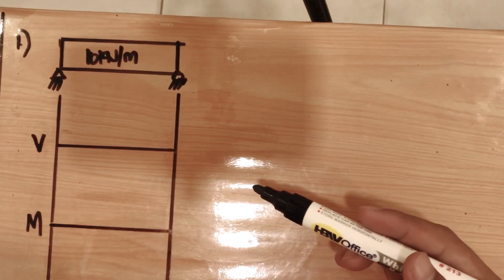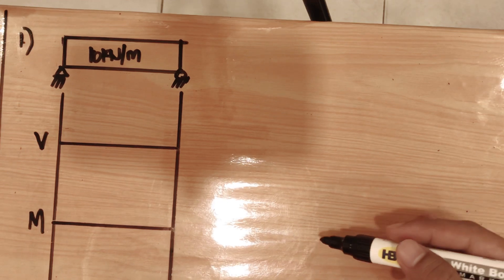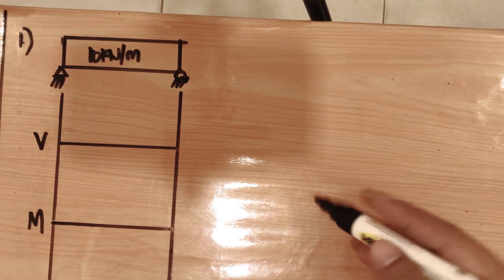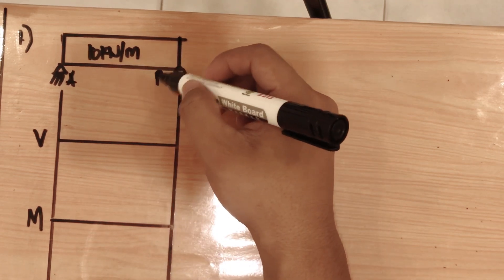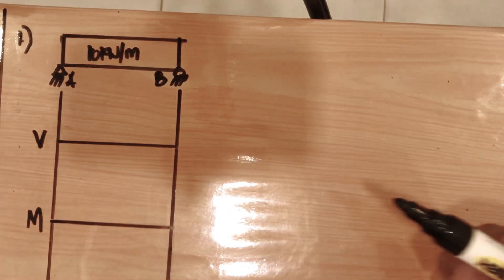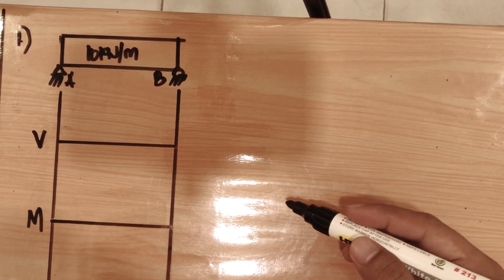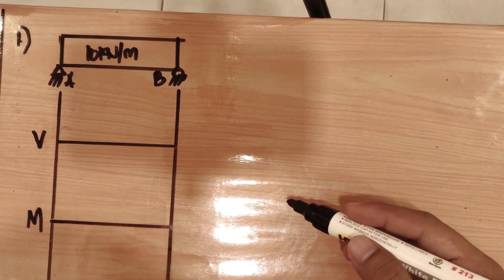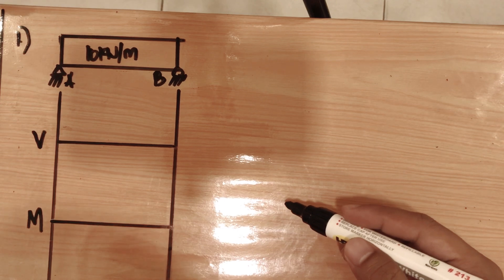For problem number one in strength of materials, draw the shear and moment diagram of the beam shown. We have a beam from point A to point B, which is a simply supported beam. The load is equivalent to 10 kilonewton per meter downward.